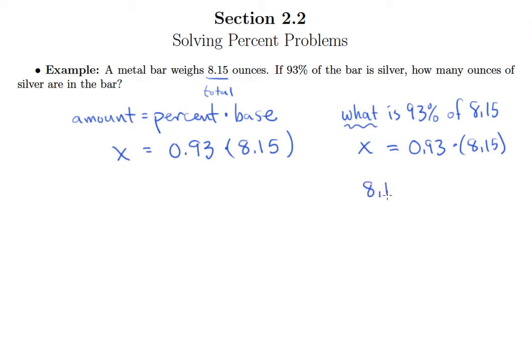So I have 8.15 times 0.93. So 3 times 5 is 15, carry the 1, we get 4, 24, and then 9 times 5 is 45, carry the 4, 9 times 1 plus 4 is 13, and 8 times 9 is 72, plus 1 is 73.